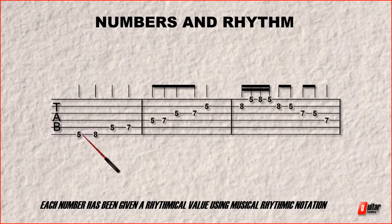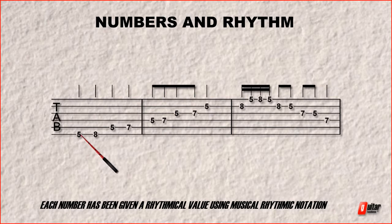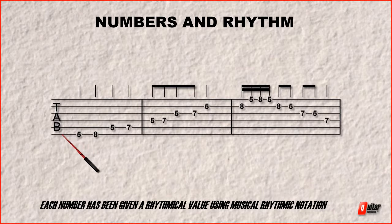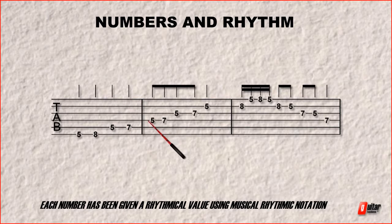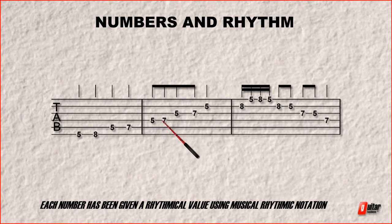Alright, so now it's given a little bit more value to this tab. Because now I know that I'm only holding the fifth fret of my low E string for a quarter note. The same with the eighth fret on my low E string is being held for a quarter note. Here we can see the fifth fret on the D string is now only being held for an eighth note. The same as the seven on the D string.